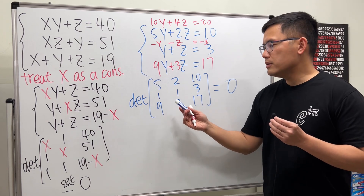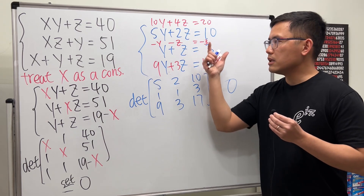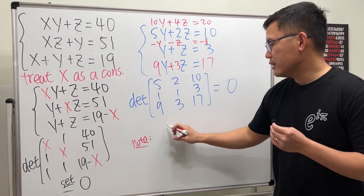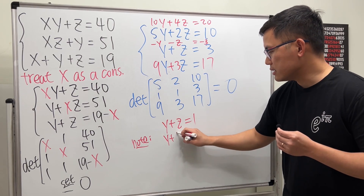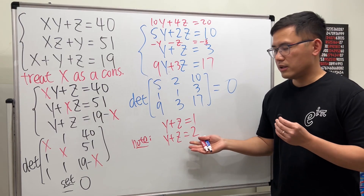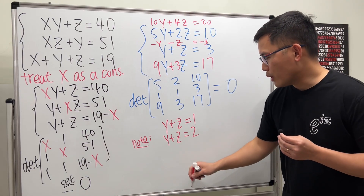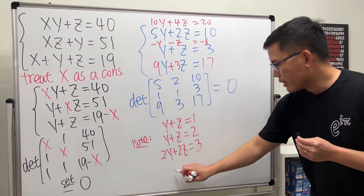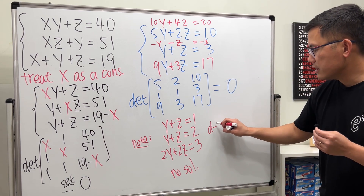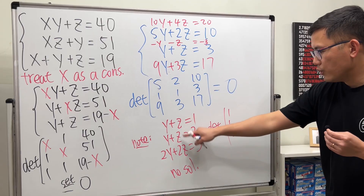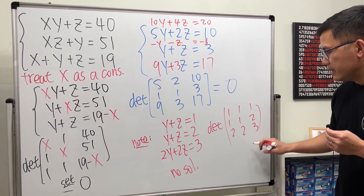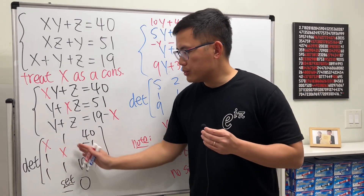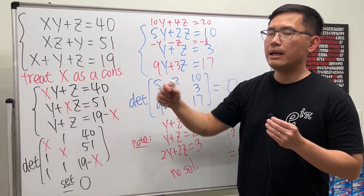Sometimes, even though the determinant of such a matrix is zero, the system might still not have a solution. For example: y + z = 1 and y + z = 2 already contradict each other, and adding 2y + 2z = 3 gives no solution — yet the determinant of [1,1,1 / 1,1,2 / 1,2,3] is still zero. So after computing x, we must go back and verify it actually works.